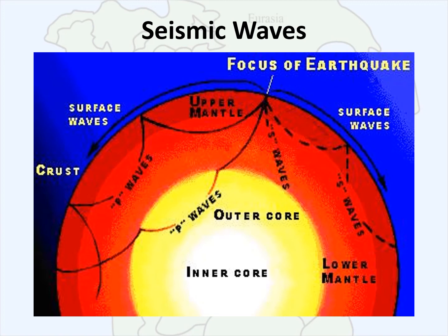Body waves are seismic waves that travel through earth's interior. There are two types: P or primary waves, and S or secondary waves. Both earthquake activity and volcanic activity are used to track plate motion over time. These data are also used to approximate the position of the continents over millions of years of time.